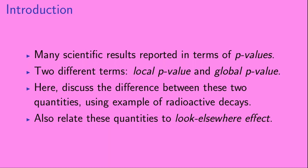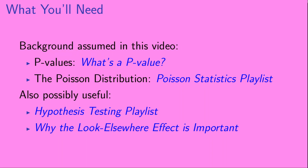At the very end of the video we'll also relate these two quantities to something called the look elsewhere effect. There is some background knowledge assumed in this video. We're going to be talking about p-values — if you don't know what a p-value is, you might be interested in the video 'What's a p-value?' available on this channel. The example will involve the Poisson distribution, and we'll also discuss hypothesis testing and the look elsewhere effect, so check out those playlists as well as the video 'Why the Look Elsewhere Effect is Important.'